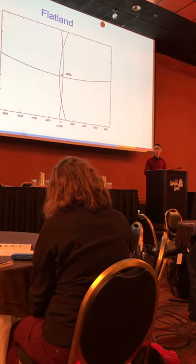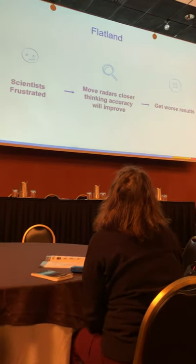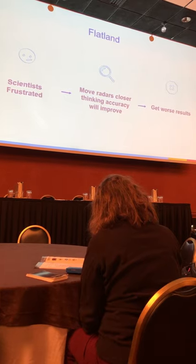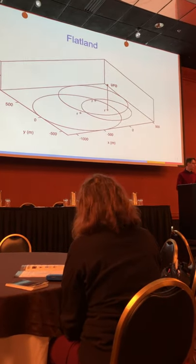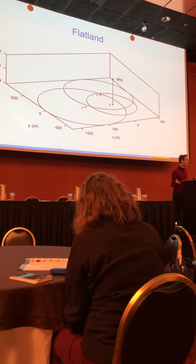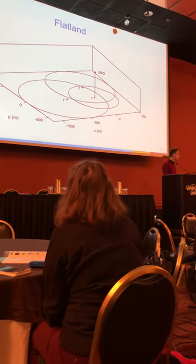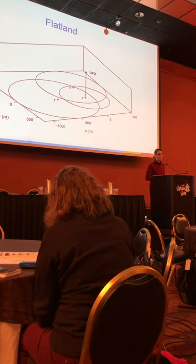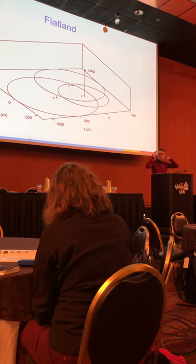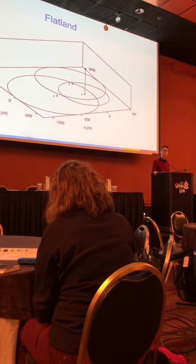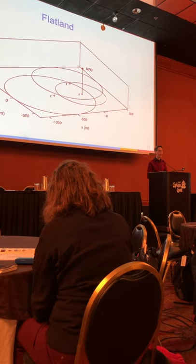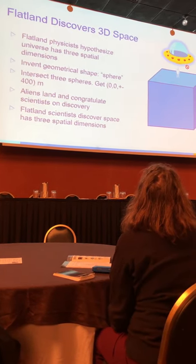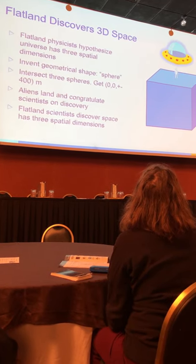They are frustrated, because they believe their equipment. So they move their radars closer in to see if they can get a more accurate answer — but when they do that, the results get worse. The three circles intersect even less well on the same scale. These smart scientists on flat land know their instruments are working, so they invent the concept of a sphere. They say there has to be a third spatial dimension, and if they intersect three spheres, there must be a reflecting object at plus or minus 400 meters above flat land at the origin. The aliens land and congratulate them — flat land scientists have discovered three dimensions of space.